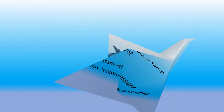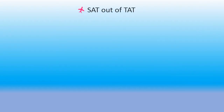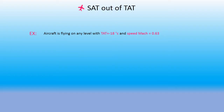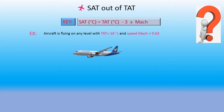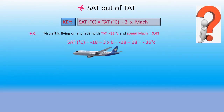Let's go to the first rule. The first formula is static temperature out of total temperature. The example is: aircraft is flying on any level with total temperature minus 18 degrees Celsius and speed Mach 0.63. The key is: static temperature in degrees Celsius equals total temperature in degrees Celsius minus 3 multiplied by Mach number. Compared to the example: static temperature equals minus 18 degrees minus 3 multiplied by 6.